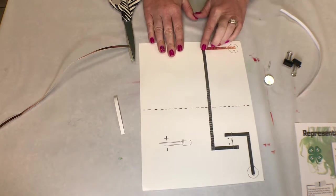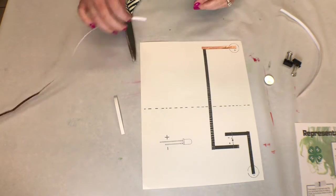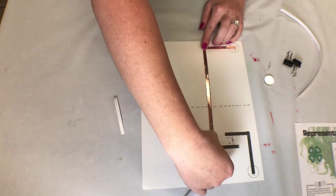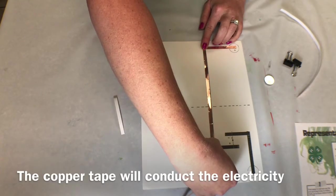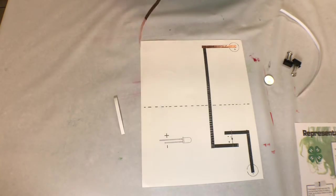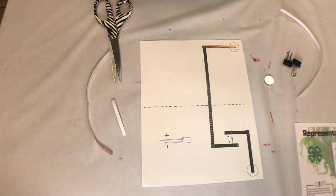One thing that's going to be important is that at each corner you're going to need to overlap the tape, and that will ensure that you get a good connection with your battery. This copper tape will conduct the electricity needed to the light.